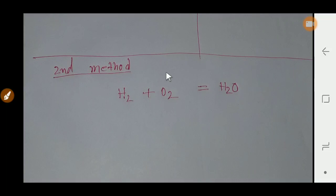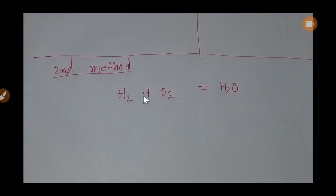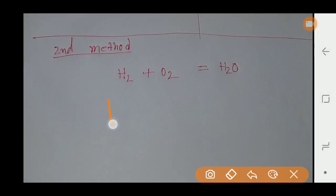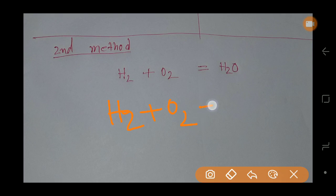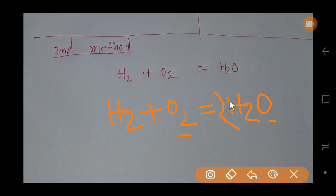Now we will balance this reaction by applying our common sense method. Hydrogen and oxygen react with each other and we get water. Here I see that oxygen on the left has two atoms but on the right has one, so I multiply the right side by two. That gives four hydrogen on the right, so I check the left side — there are two hydrogen — and I place a coefficient of two. This is the balanced reaction.